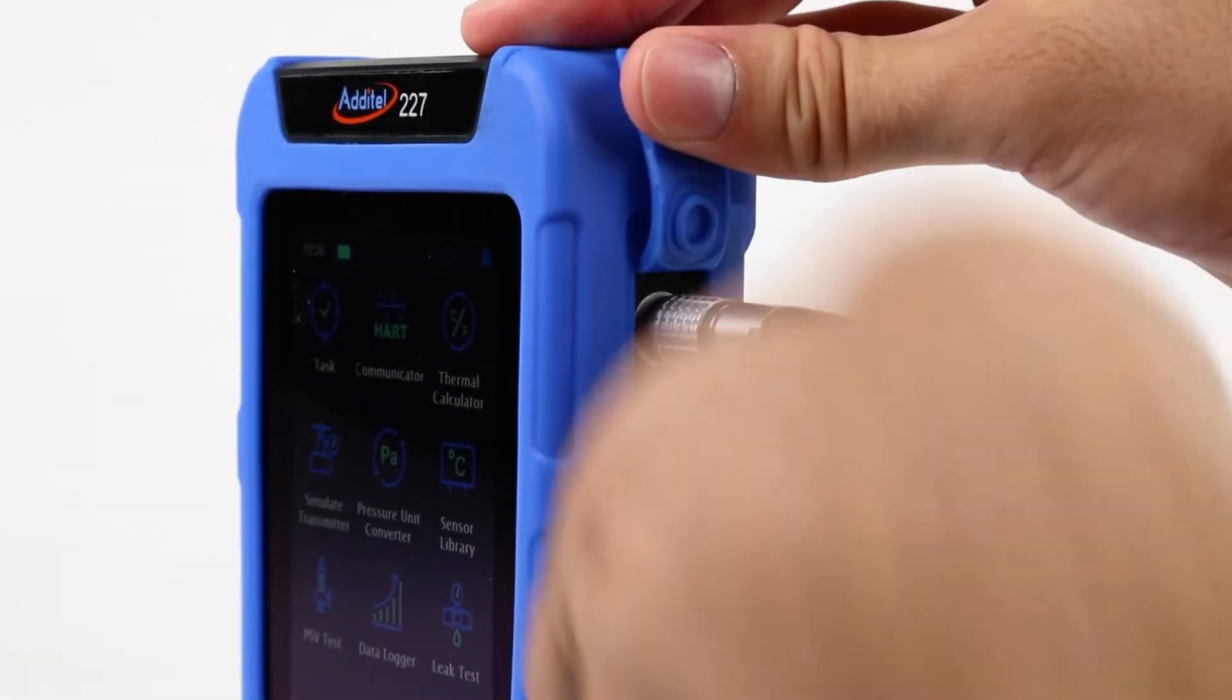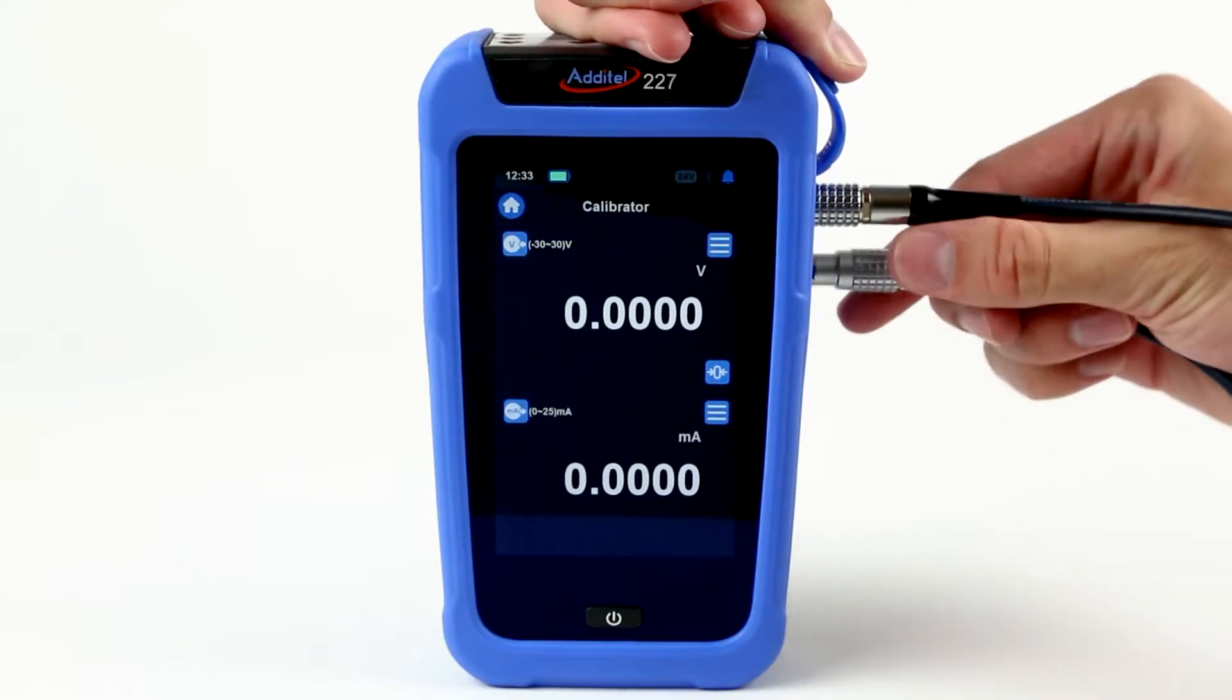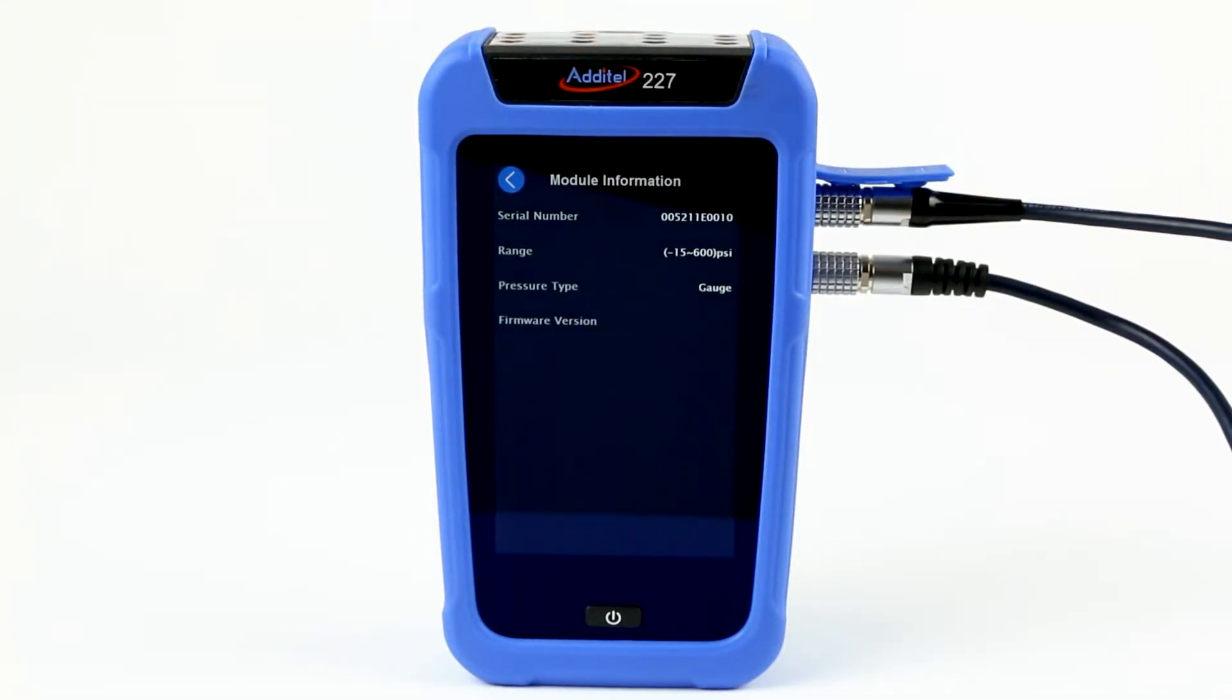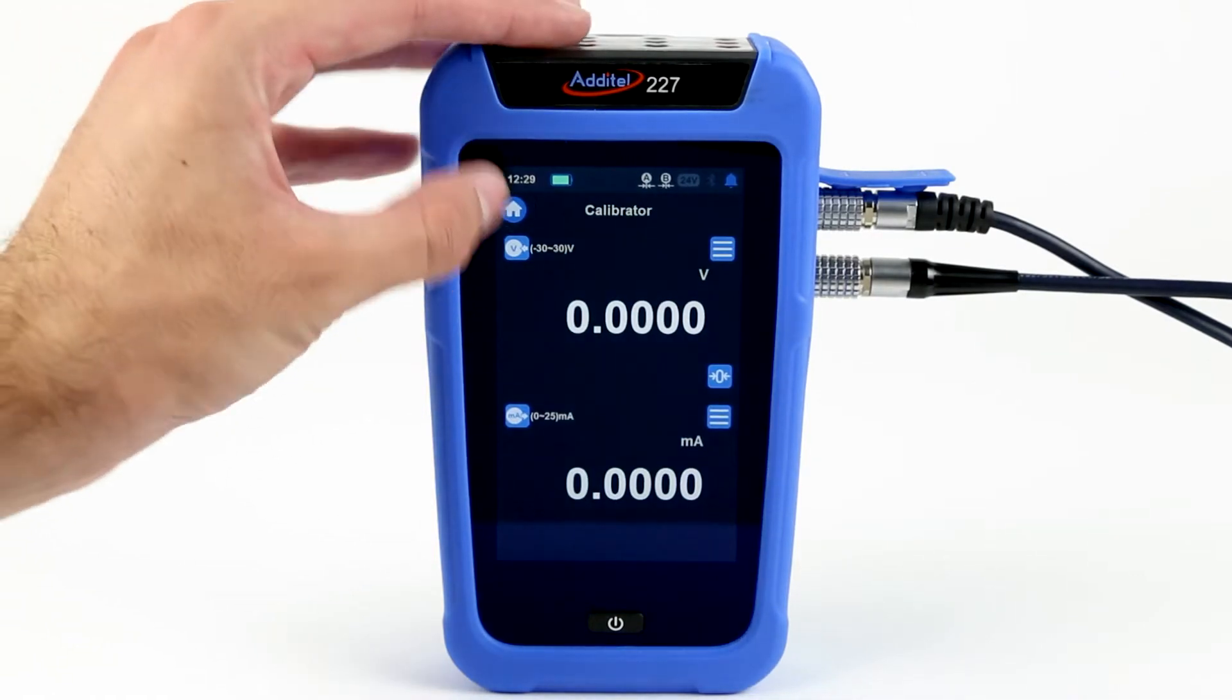Each ADT 227 and 226 come with the ability to measure two digital pressure modules. These calibrators also have a measurement selection to measure the difference between channel A and channel B.